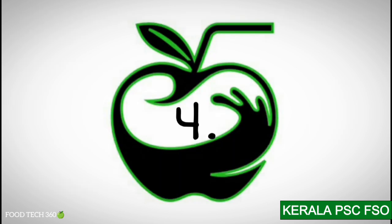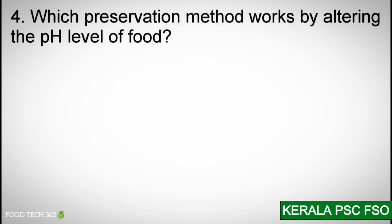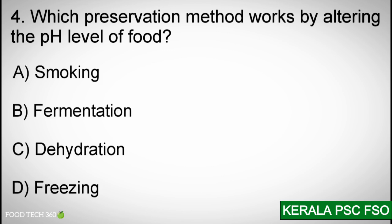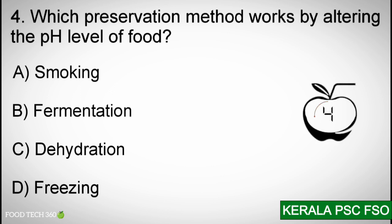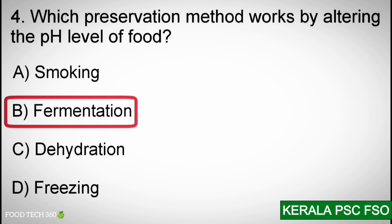Question number 4: Which preservation method works by altering the pH level of food? A. Smoking, B. Fermentation, C. Dehydration, D. Freezing. Correct answer: B. Fermentation.